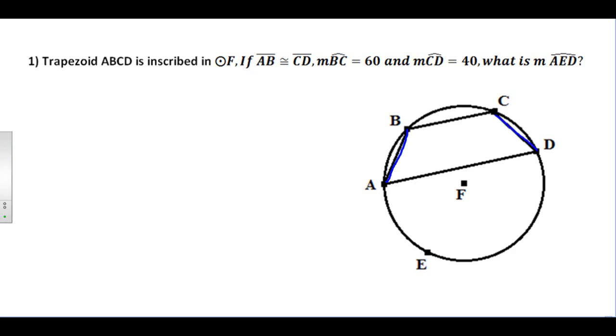Well, we had a theorem earlier that said if two chords are congruent, then their arcs are as well, so I immediately know that these two arcs, AB and arc CD, would also have to be congruent.